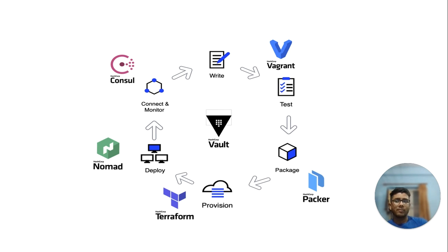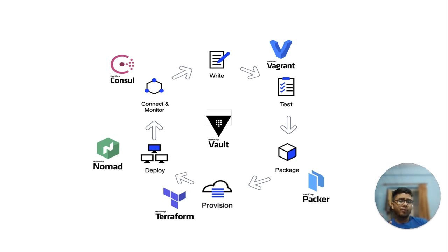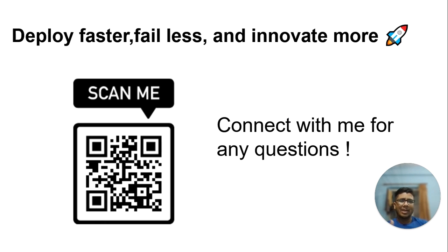Let's take a simple example where all HashiCorp tools are used together — from write, test, provision, deploy, to monitor. Most HashiCorp tools like Vagrant, Packer, Terraform, Nomad, Consul, and Vault are all helping somewhere, but Nomad, Consul, Vault, and Terraform are majorly helpful for making automated deployment pipelines. Deploy faster, fail less, and innovate more. If you have any questions, connect with me. Thank you.